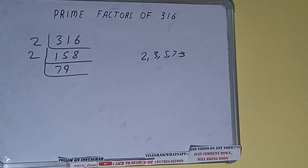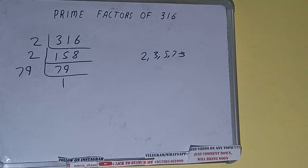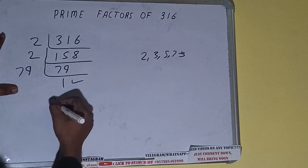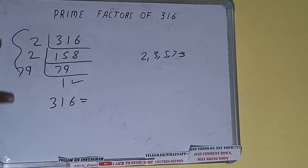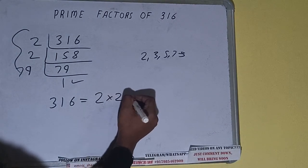prime number, so it is only divisible by itself. Once we divide 79 by 79, we get one. Once we get one, we need to stop and do one last thing. The prime factorization of 316 equals multiplying whatever we have on the left-hand side, that is 2 × 2 ×